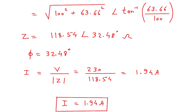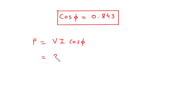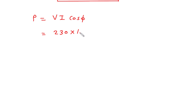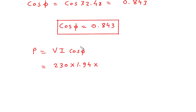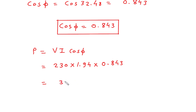Then next and last, we have to calculate power. The formula for power is V into I into cos phi. Substituting the values: voltage is 230V, current is 1.94 ampere, and cos phi is 0.843. So this will be 230 multiplied by 1.94 multiplied by 0.843, which is equal to 376.14 Watt.